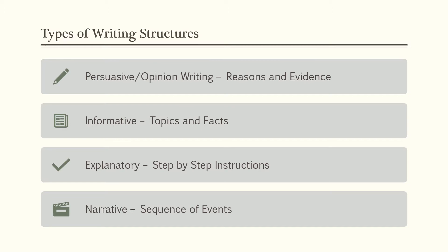To recap: persuasive writing is organized by reasons and evidence; informative or explanatory writing is organized by topics and facts or step-by-step instructions; and narrative writing is organized by a sequence of events. Within each of those standards, they tell you exactly what you'd be teaching at each grade level.